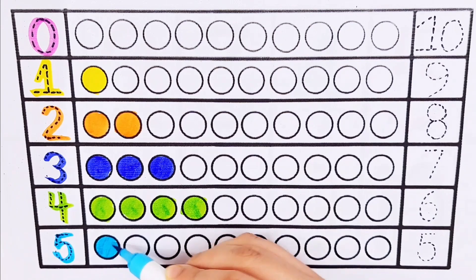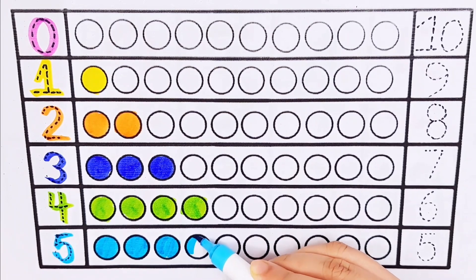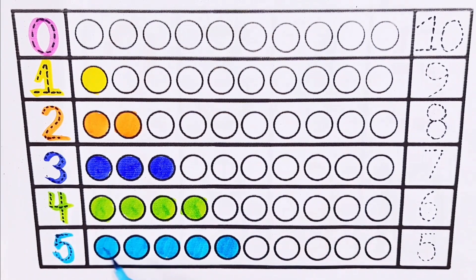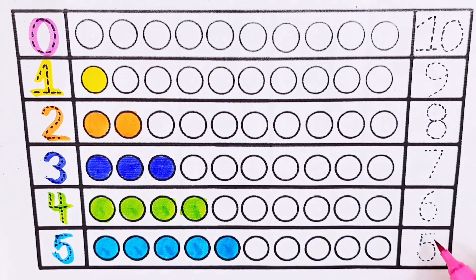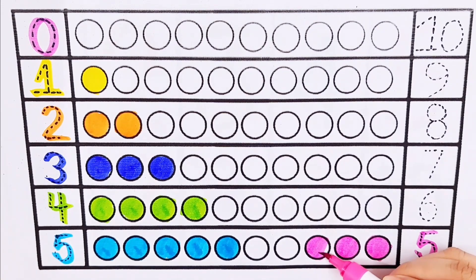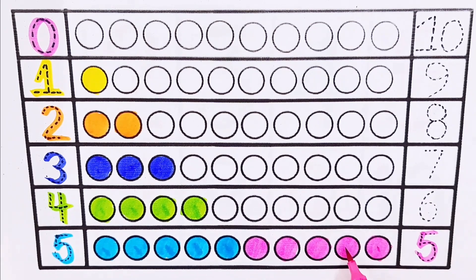One, two, three, four, five — five balls. One, two, three, four, five — five balls. Five plus five equals ten.